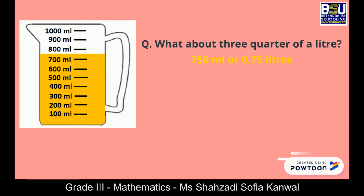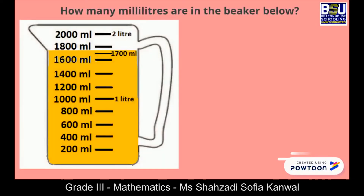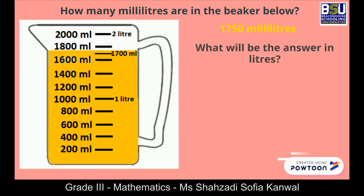Right. How many milliliters are in the beaker below? It is in the middle of 1700 milliliters and 1800 milliliters, so the answer is 1750 milliliters. Correct.